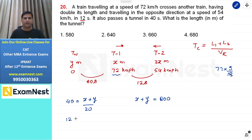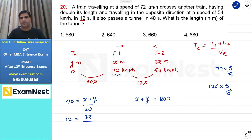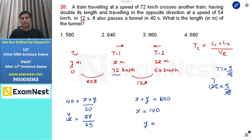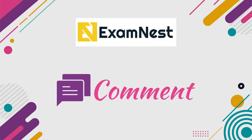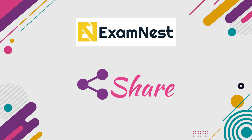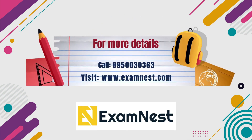Second condition: दोनों trains opposite direction में, relative speed = 72+54 = 126 km/h = 35 m/s। Crossing time: 3X / 35 = 12 seconds, so X = 140 meters। Y की value निकालने के लिए X यहाँ substitute करें: Y = 800 - 140 = 660 meters। Third option हमारा answer होगा।